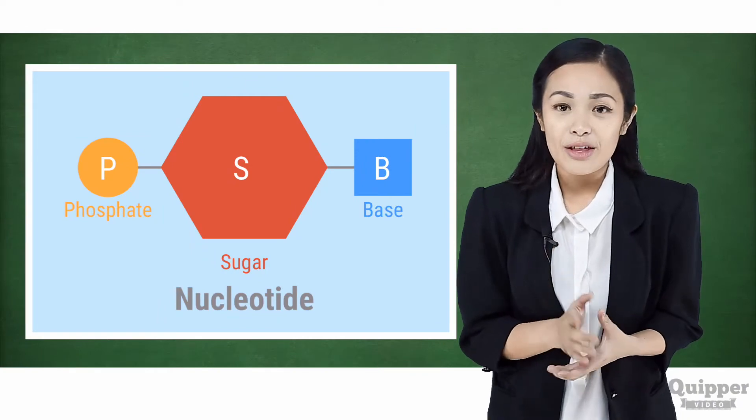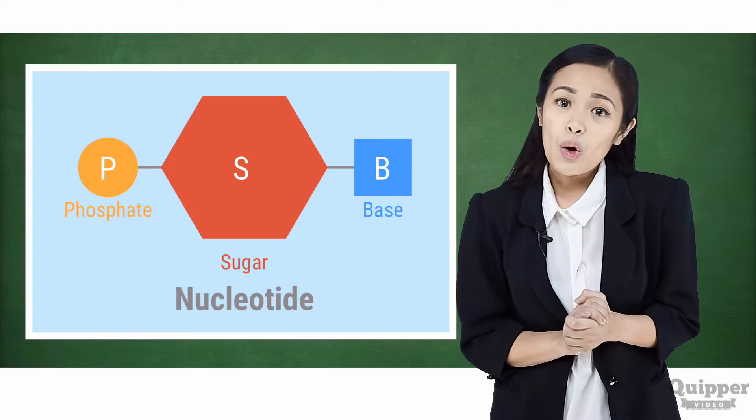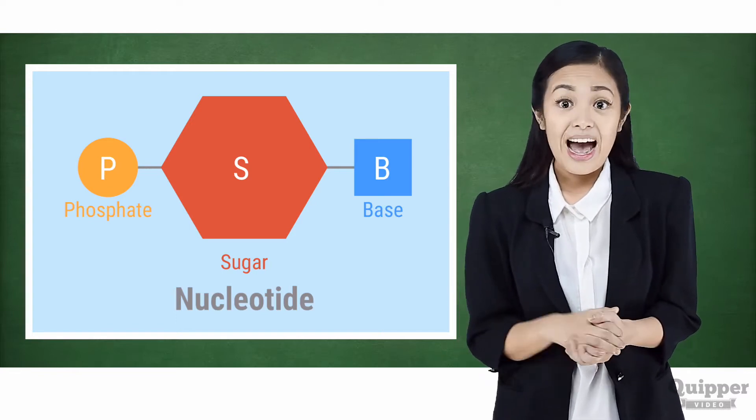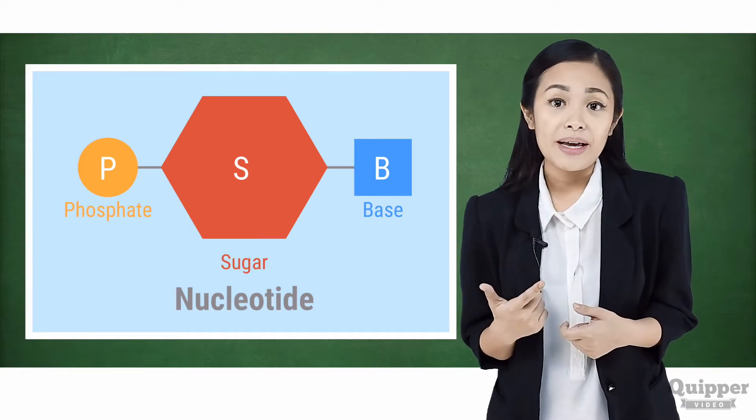Let's study the components of a nucleotide. Nucleotides are compounds with three components: a five-carbon sugar, a phosphate group, and a nitrogenous base.